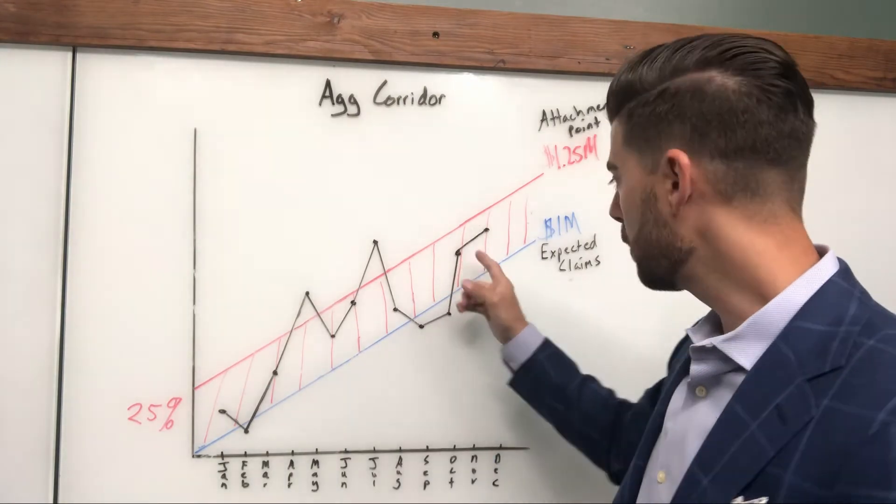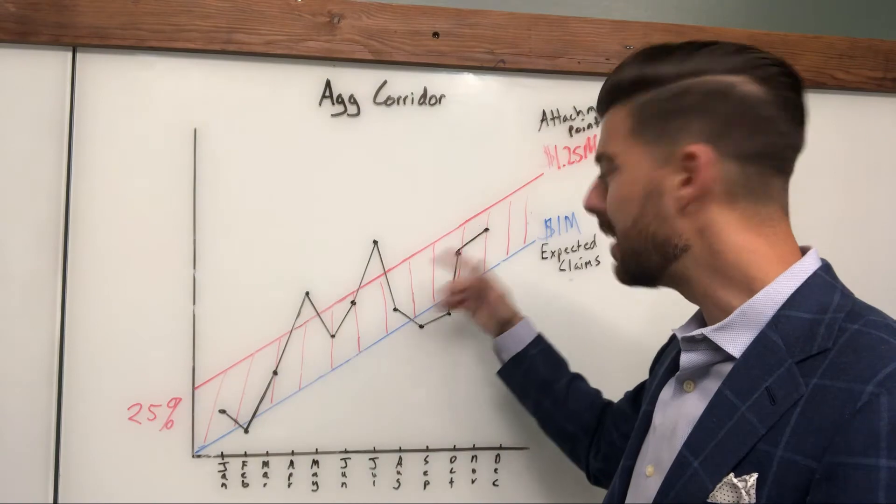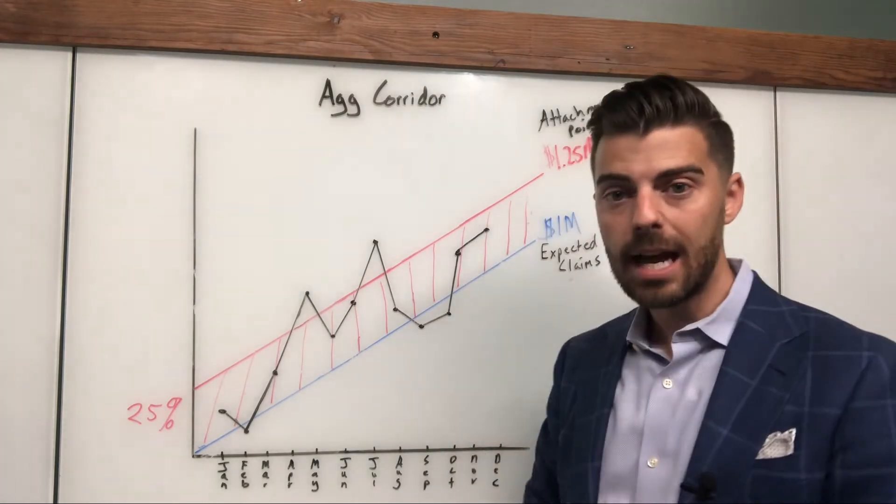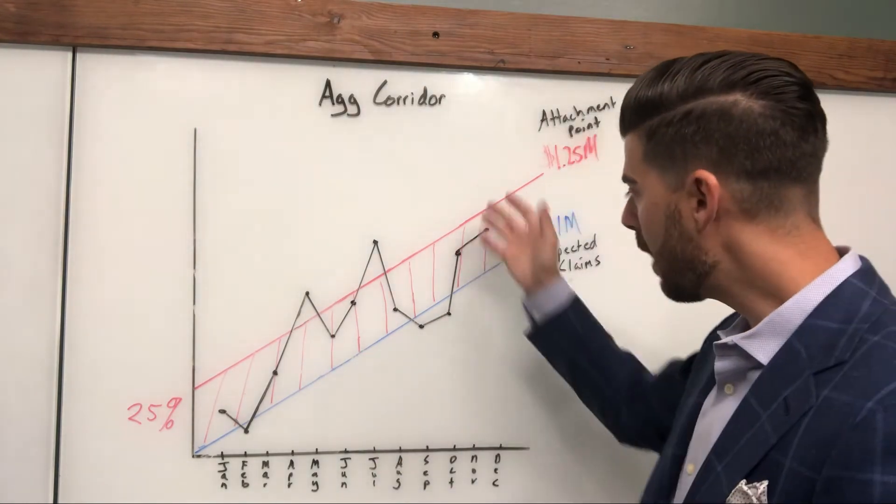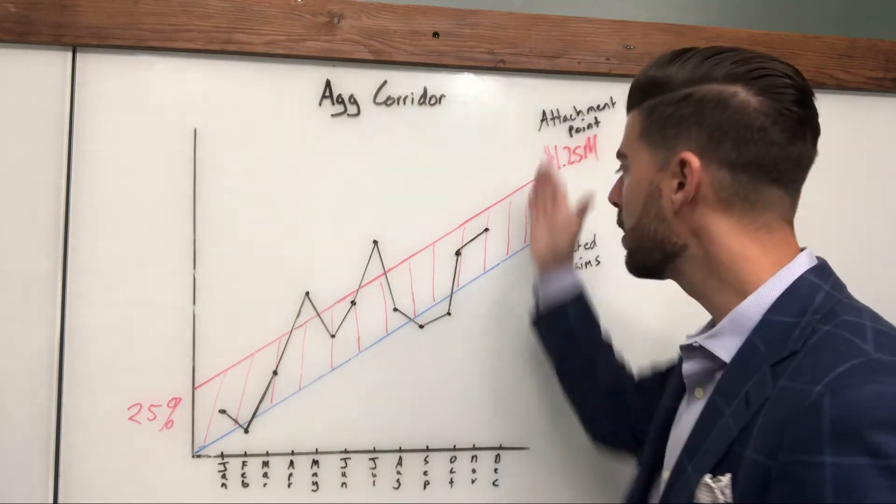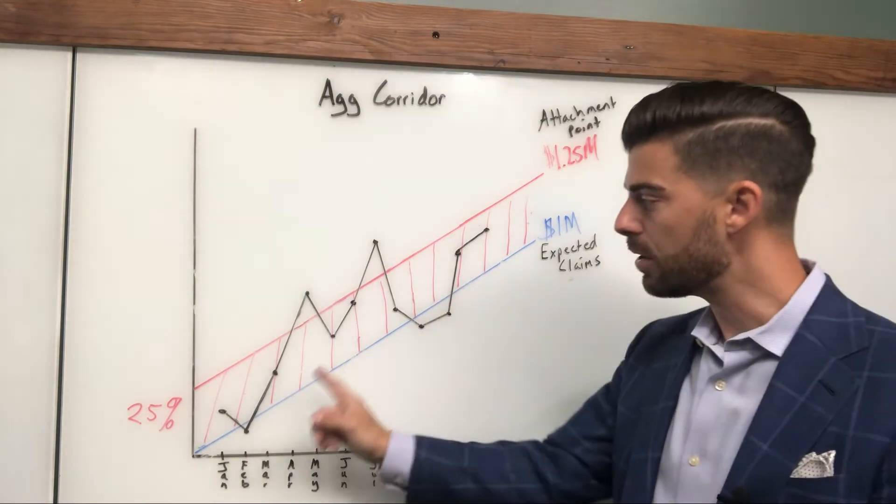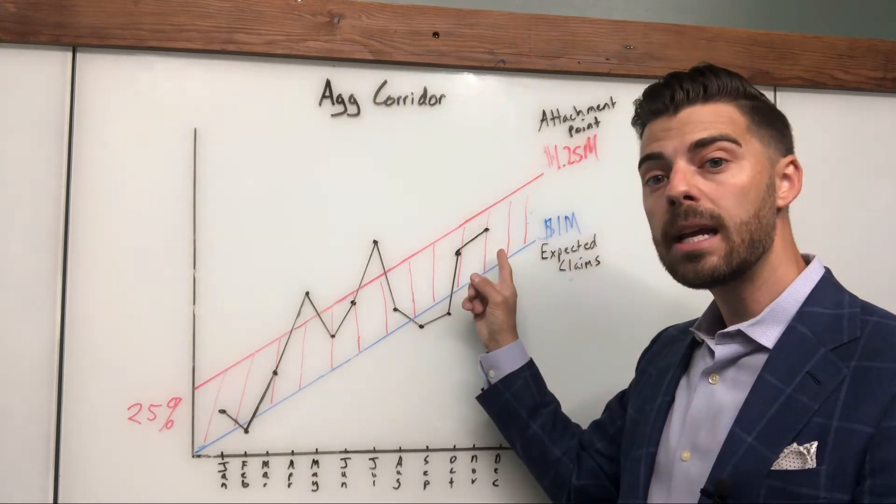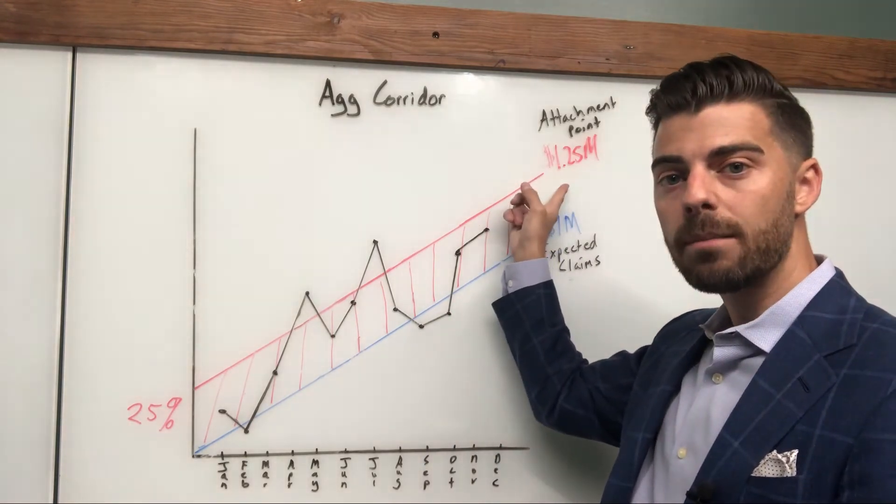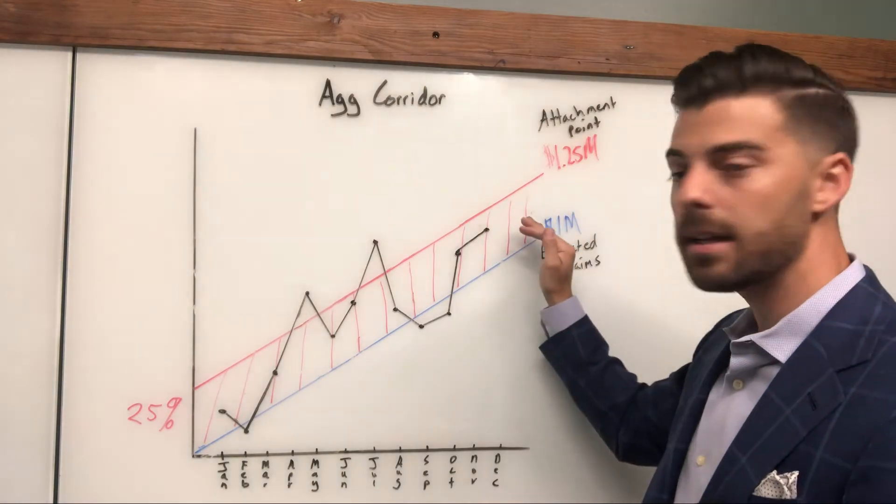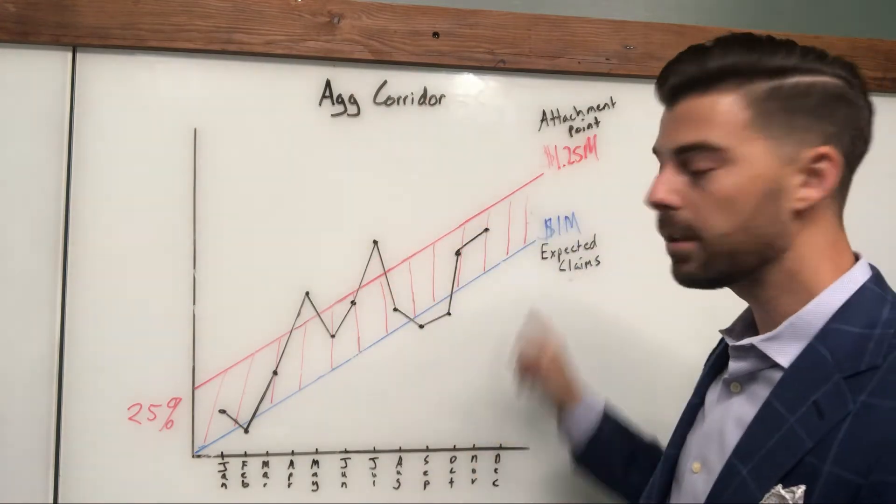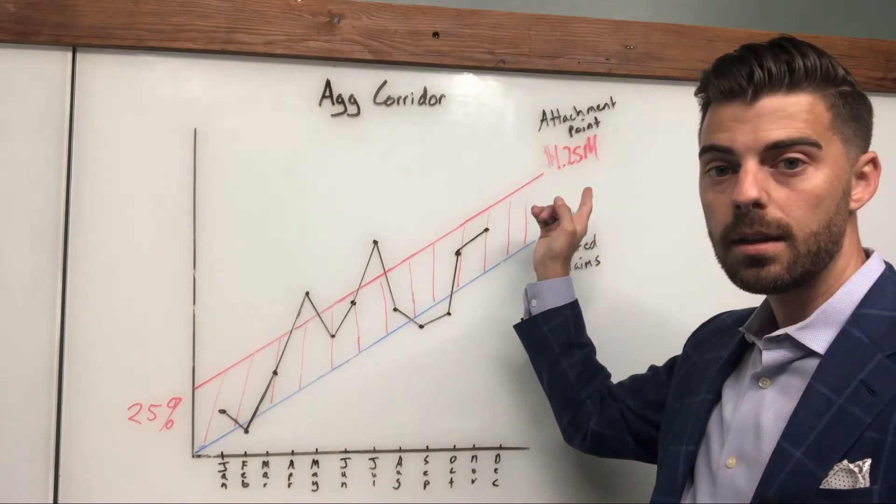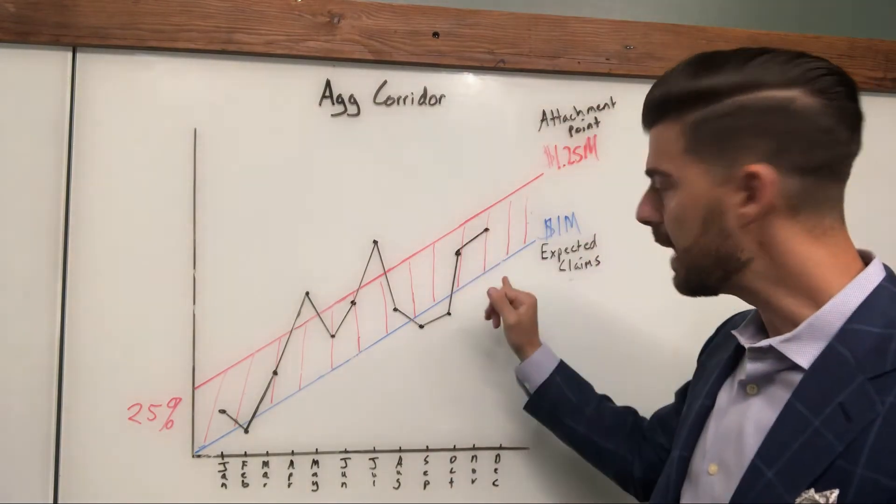But in this scenario, this employer didn't, at the end of the year—and this is a basic illustration, there's no runout—but the employer did not at the end of the year actually end up above that attachment point. So what does that mean? There'll be a reconciliation period. If there's some runout claims that bump them up over it, then there would be a reimbursement. But in the scenario I just drew, even though they breached in two individual months, the overall plan year did not exceed that $1.25 million attachment point. They ended up higher than expected, they didn't exceed that attachment point. So in this particular scenario, the stop loss carrier will not be reimbursing under the ag part of the contract because they landed below that line.